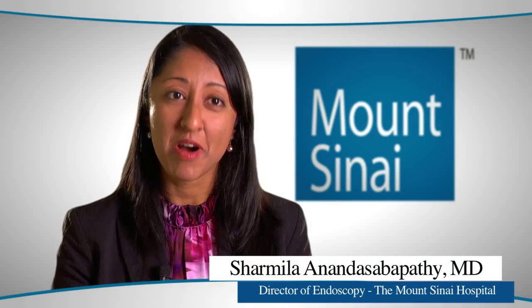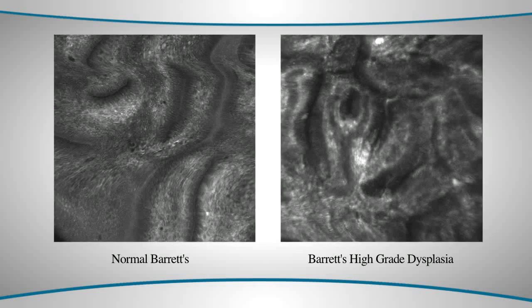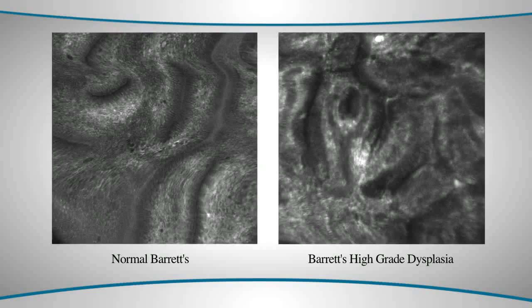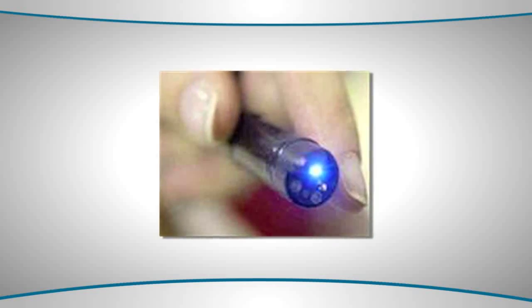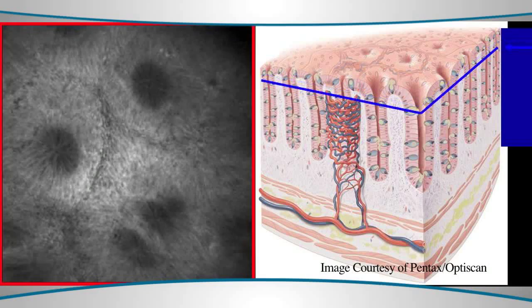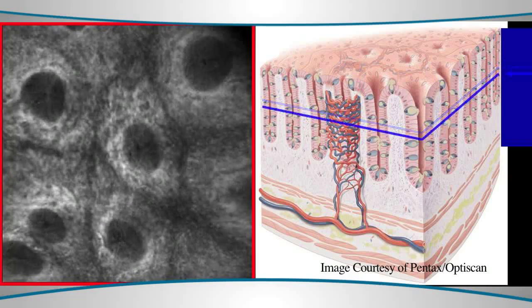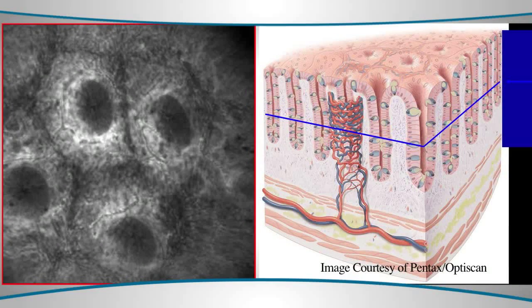Confocal microendoscopy is a remarkable innovation in the endoscopic armamentarium. In a confocal examination, either a catheter-based microscope or a microscope integrated into the endoscope is passed into the esophagus of the patient. The device has a laser at a very low wavelength, which performs imaging of the very superficial lining of the esophagus. It images to a depth of about 250 microns, imaging the very superficial epithelium of the esophagus.